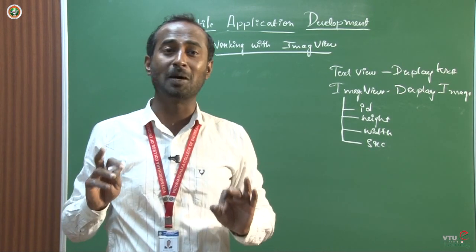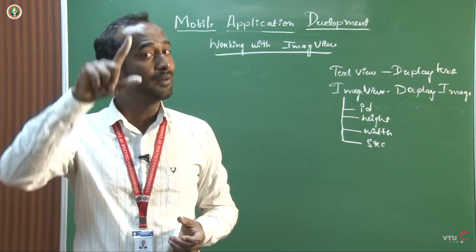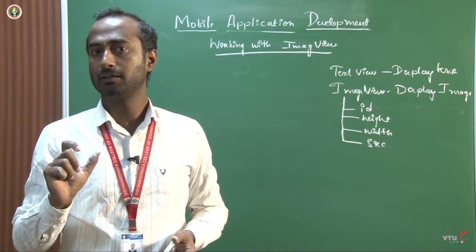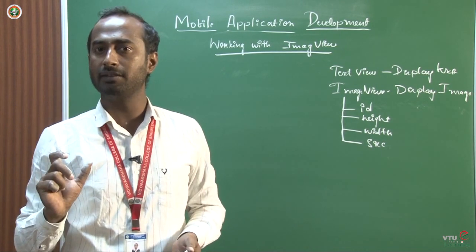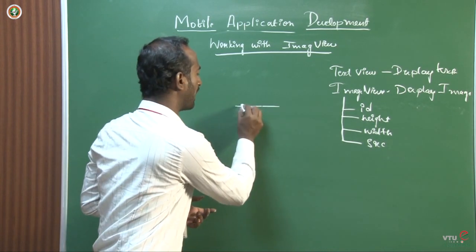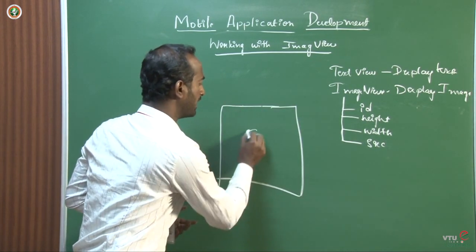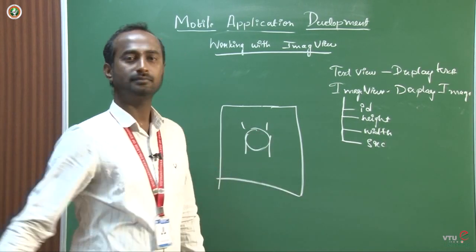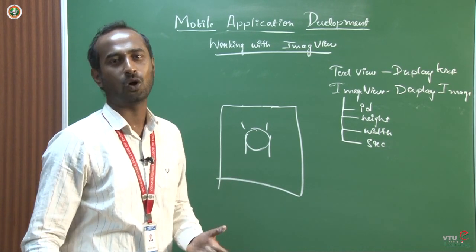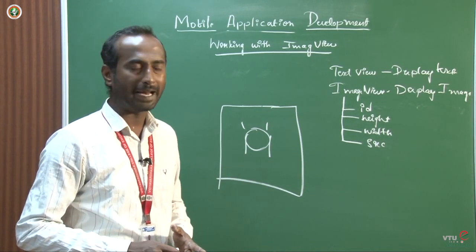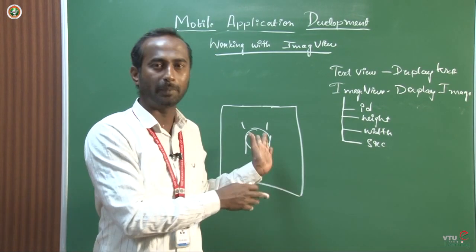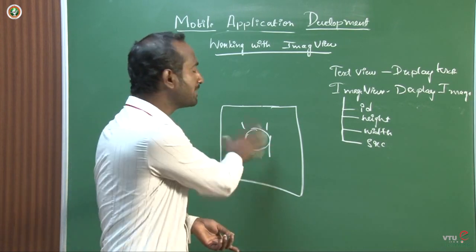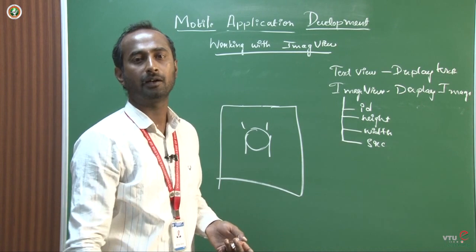The primary thing you must know with respect to ImageView: whenever you drag and drop an ImageView to the design, it will automatically ask for an avatar — whether you want a particular person image. You might observe the Android icon being used there. That is the avatar provided as a placeholder; that is not the actual image used in the application. Instead of leaving an empty hollow space, it will display the Android logo in that space.